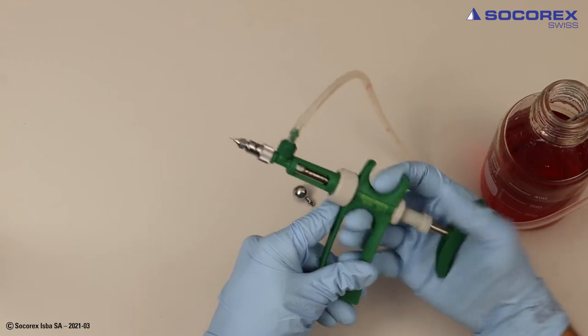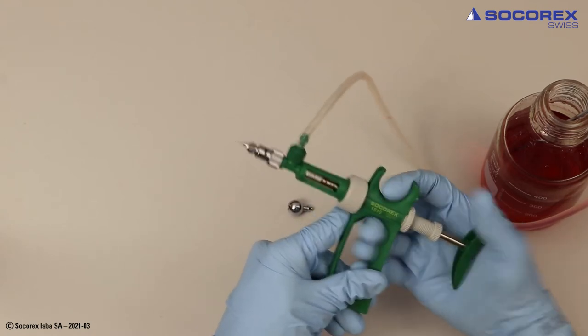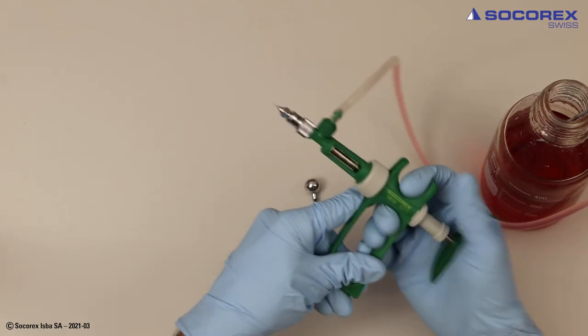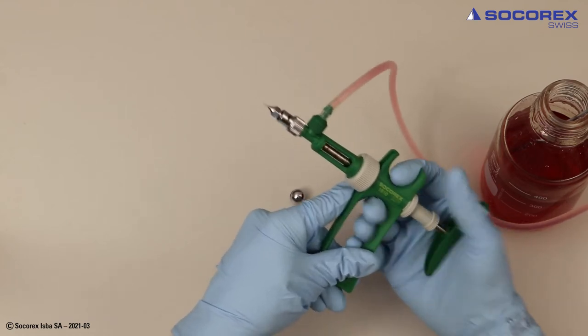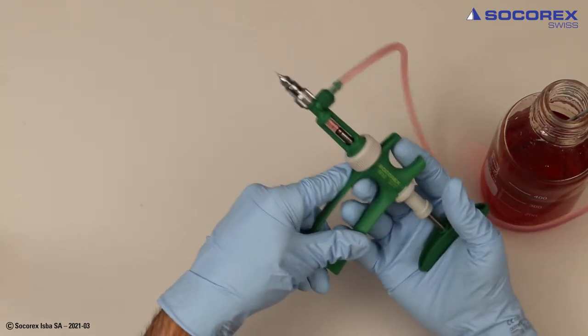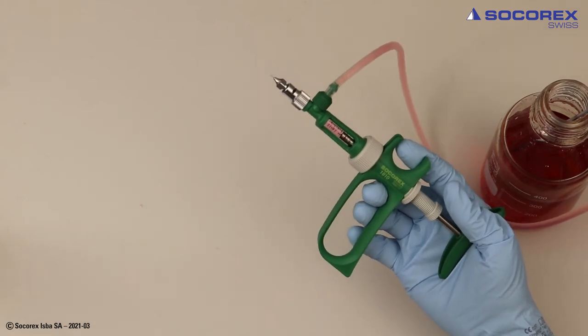Now prime tube and glass cylinder until vaccine comes out of the needle. Then eliminate any air bubbles remaining in the glass barrel.